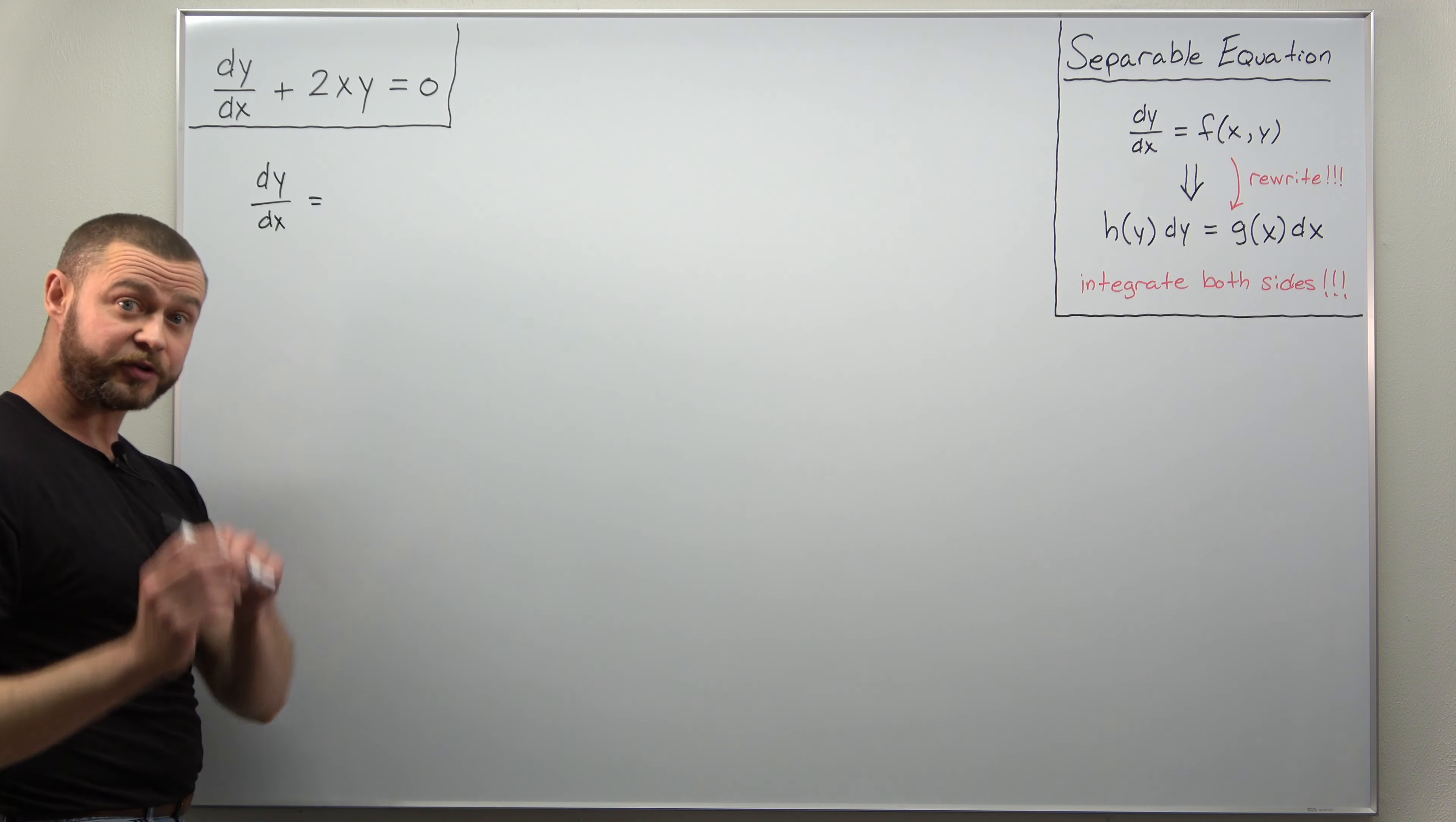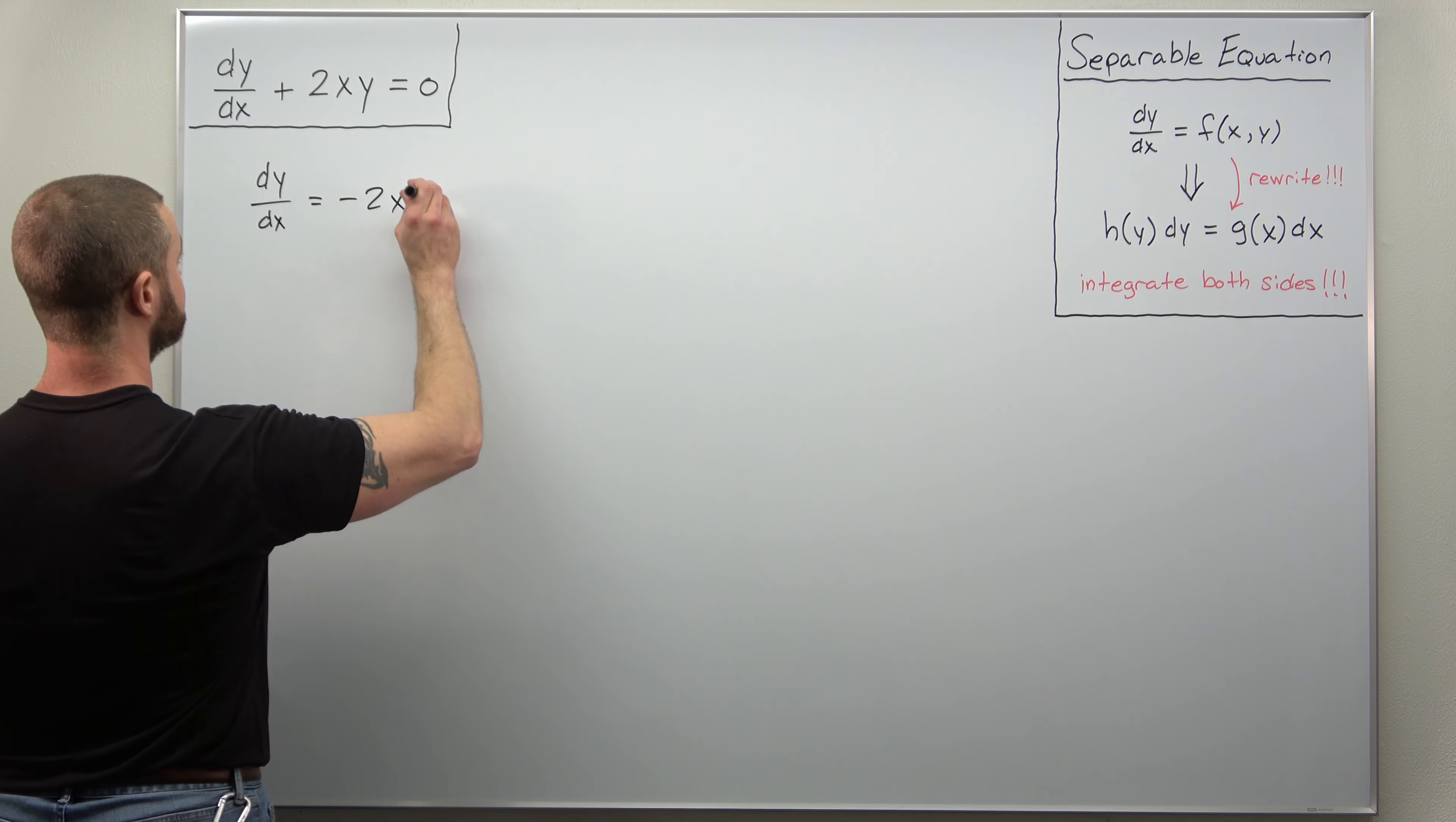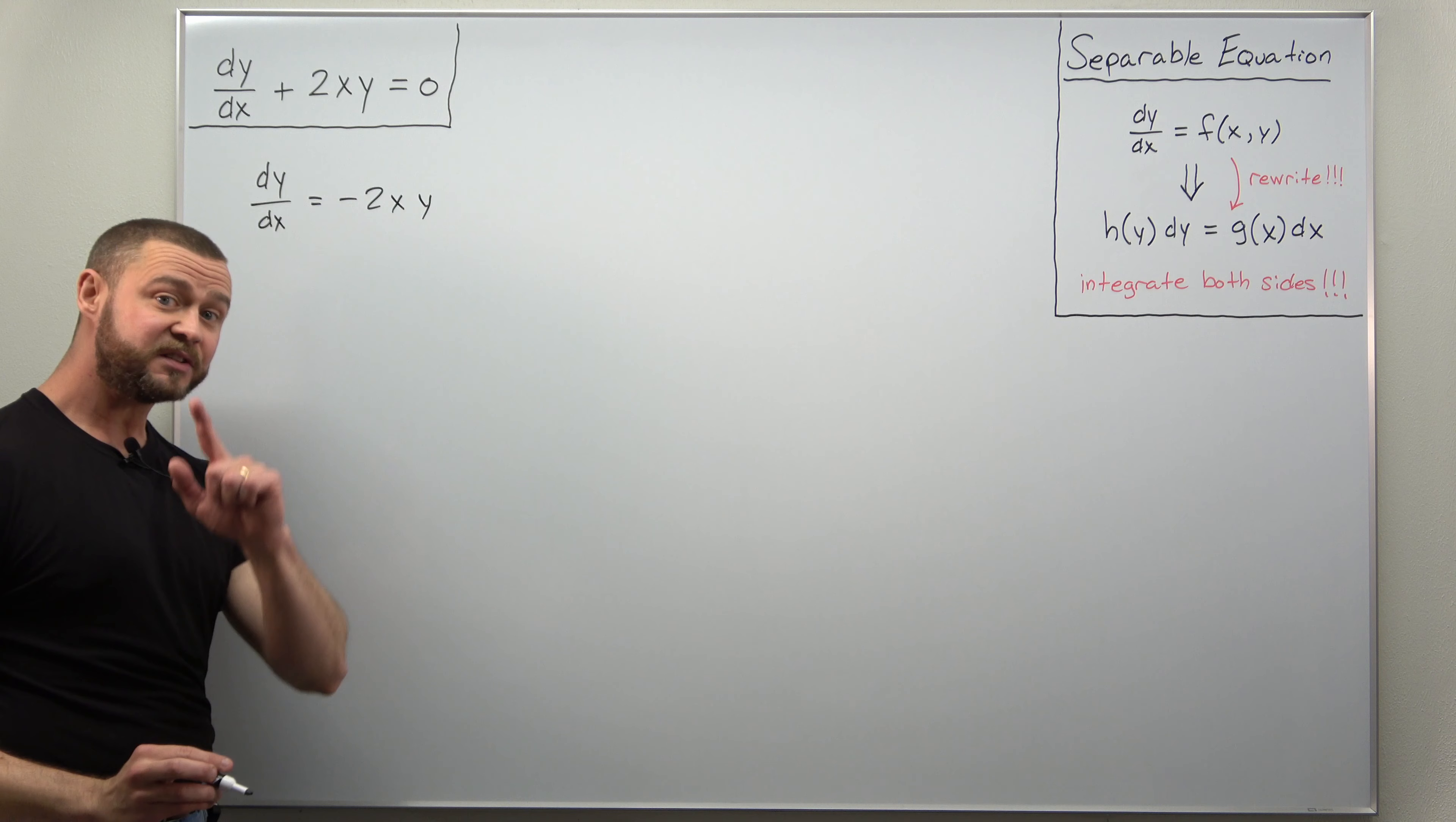So we're going to get now the derivative dy over dx equals negative 2xy. And from here we can easily separate it.